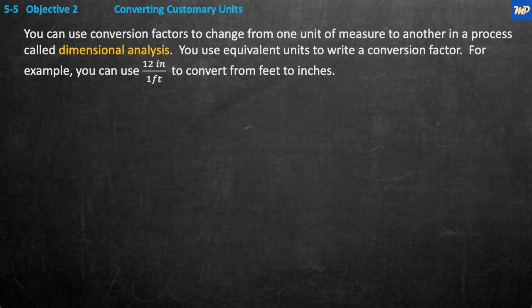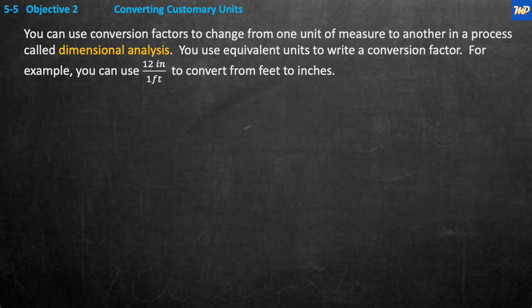Objective two: converting customary units. You can use conversion factors to change from one unit of measure to another in a process called dimensional analysis. You use equivalent units to write a conversion factor — for example, 12 inches per one foot to convert from feet to inches. If you wanted to convert from inches to feet, you'd write it as one foot over 12 inches. The units you're converting to go on top; the units you're converting from go on the bottom.